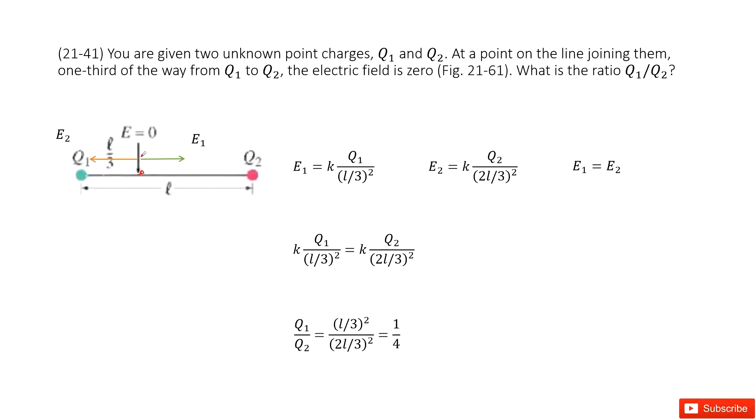To make the electric field zero at this point, the magnitude of E1 must equal E2 because they are in opposite directions. We write the magnitude of E1 as k times q1 divided by the distance squared.